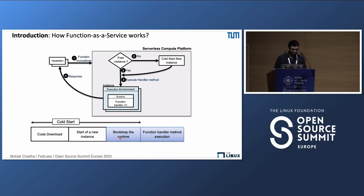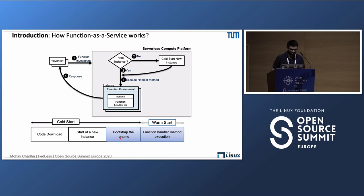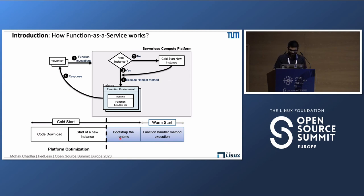The FaaS platform can create concurrent function instances to handle multiple events on demand. When the number of requests decreases, the platform can automatically scale down the number of active function instances to zero. In a cold start, you download the code, start a new instance, bootstrap the function runtime, and then execute the function handler. If there's already an active function instance, only the handler method is executed — that is called a warm start.